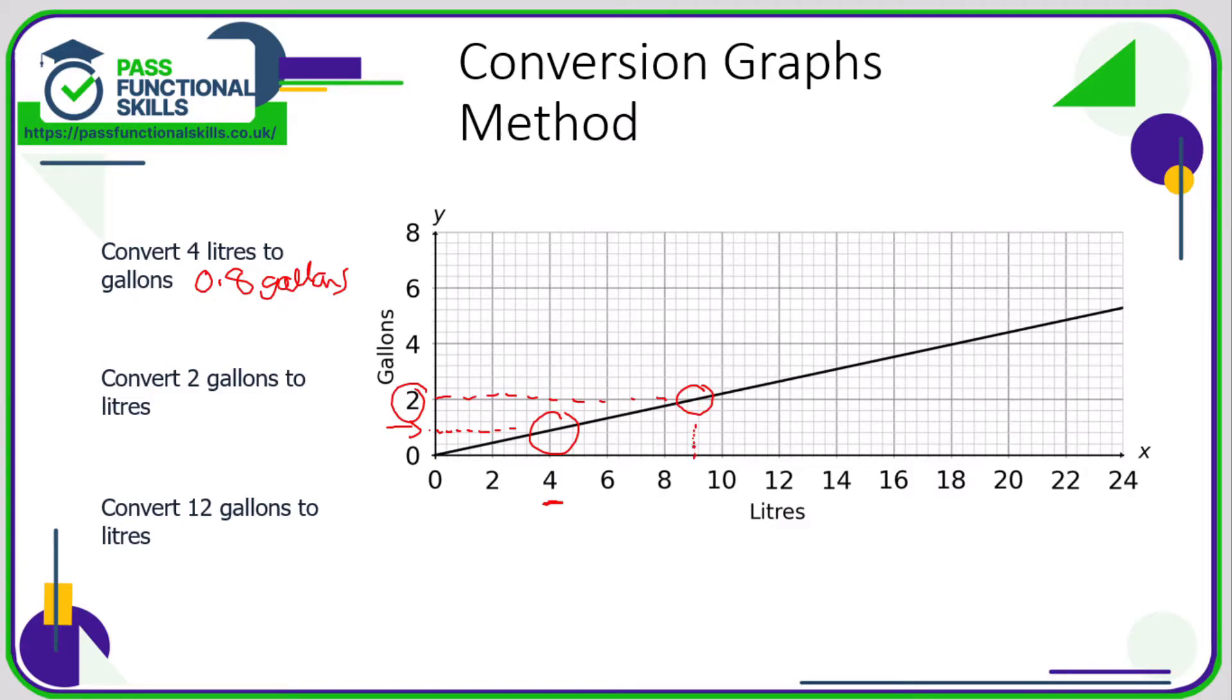Here we're going from eight to ten, so again we're going up in 0.4, so 8, 8.4, 8.8, 9.2. I'd say it's halfway between 8.8 and 9.2, so I think it's safe to say that that line is approximately nine liters. Again, if you wrote 8.8 or 9.2, I'm sure you'd get that perfectly correct.